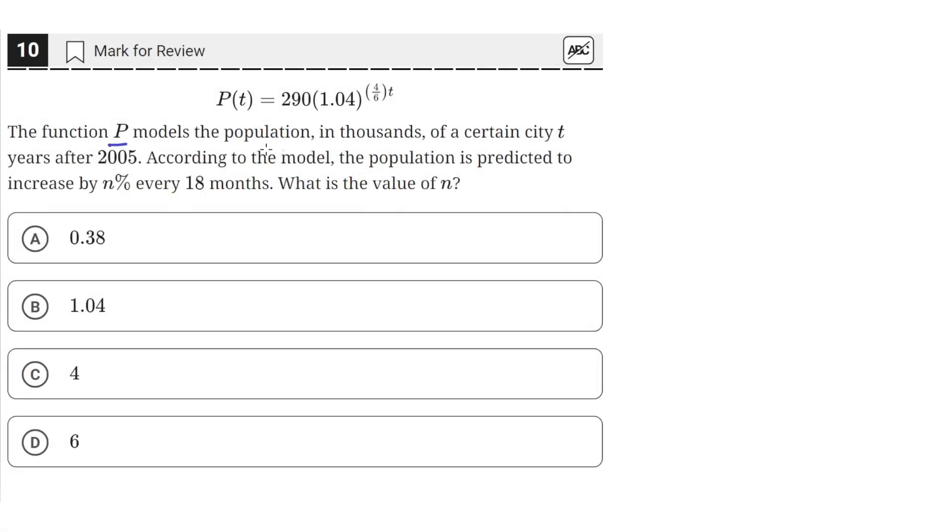The function P models the population, in thousands, of a certain city t years after 2005. According to the model, the population is predicted to increase by n percent every 18 months. What is the value of n?